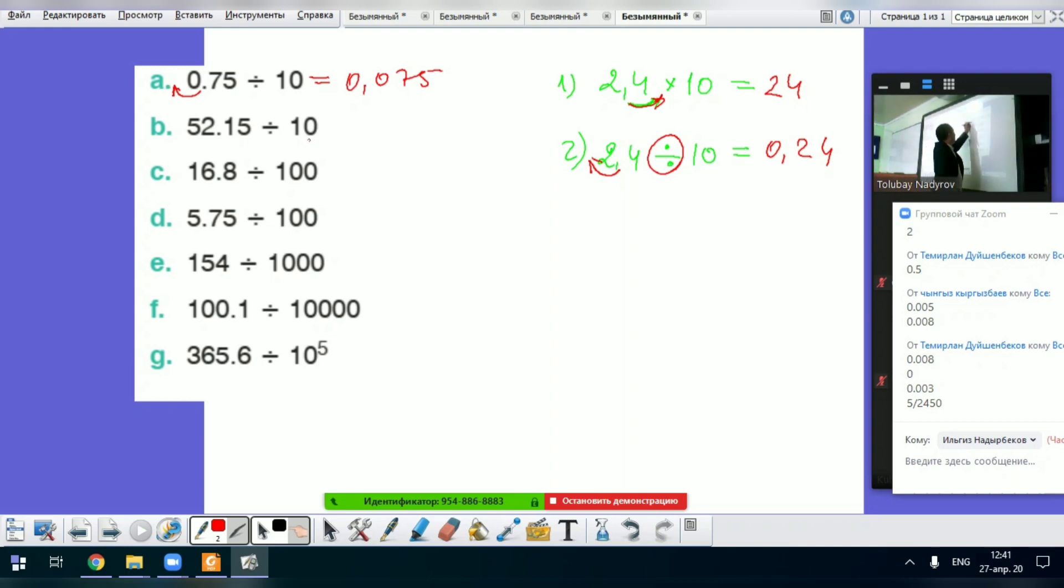Okay, and look at here. If there is one zero, so decimal point moves one place to the left side. So it's equal to 5.215, understand?